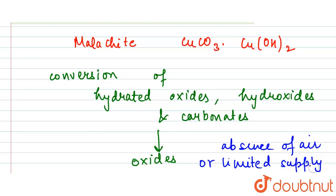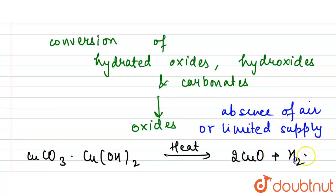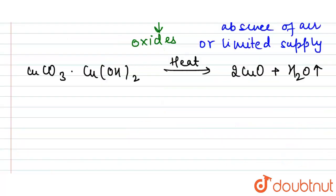Now, if we see the reaction for the given ore, we have CuCO₃·Cu(OH)₂. When we heat it, we have the formation of 2CuO plus H₂O and CO₂ are evolved.